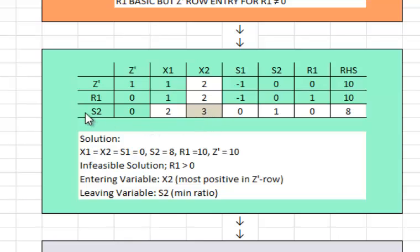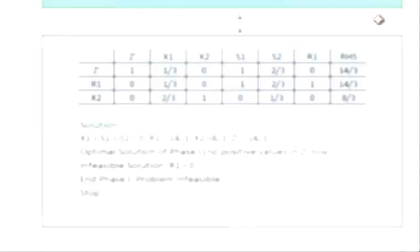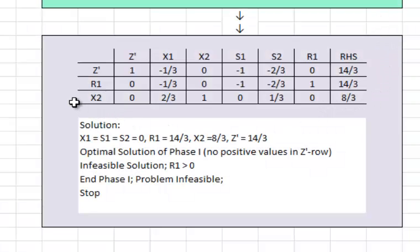X1 enters into the basis and S2 leaves the basis. As we process this tableau and complete the iteration, X2 has replaced S2 and the final resulting tableau after operation has been depicted here.